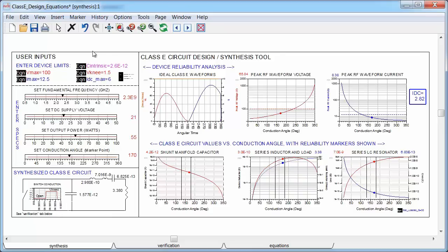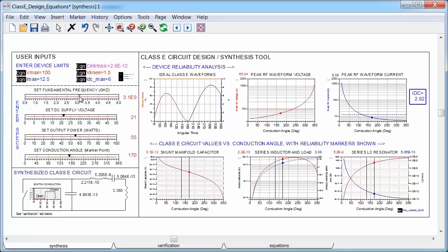Okay, so let me demonstrate. On the left hand side, I enter the device parameters, so maximum voltage and current, knee voltage, and internal parasitic capacitance of the device.